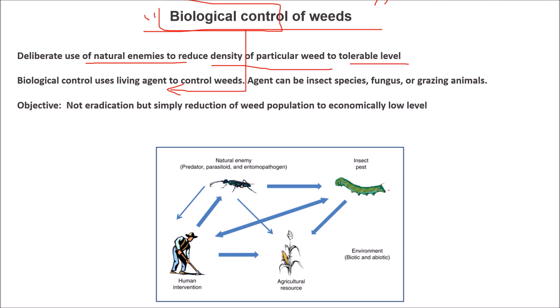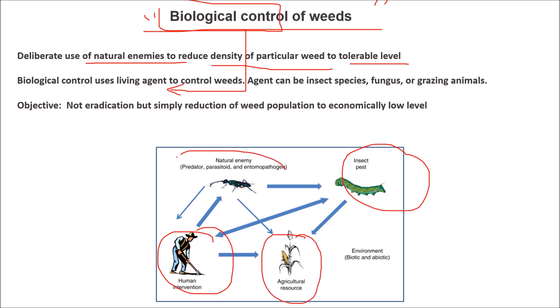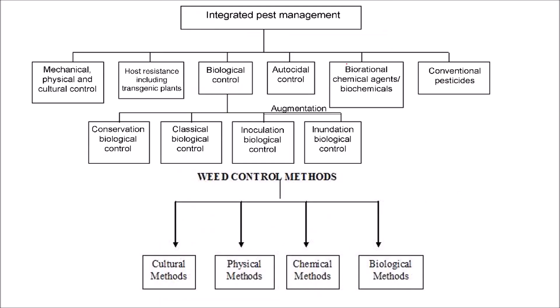The basic process involves an insect pest, human intervention, agricultural sources, and the natural enemy. The natural enemy can be a predator, a parasitoid, or an entomopathogen or any other organism. All of them interact within a system along with biotic and abiotic environmental factors, and together they form what we call an integrated pest management approach.